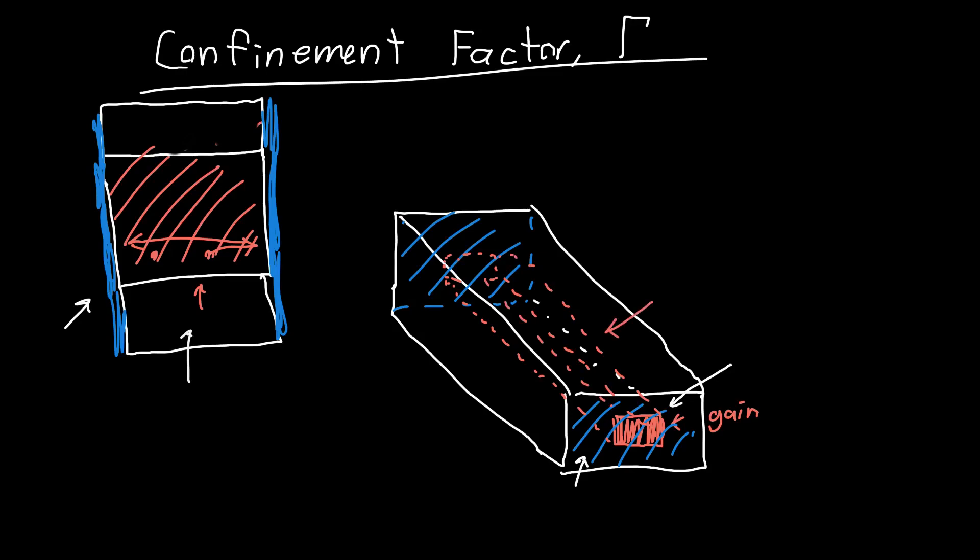So we've got some gain material inside of some other material. And this is how we ensure that the electric field is confined to the gain region. But we know that some of the electric field, it's not going to be perfectly confined. Some of the electric field is going to leak out, is going to be contained not just in the gain region, but also outside of the gain region.